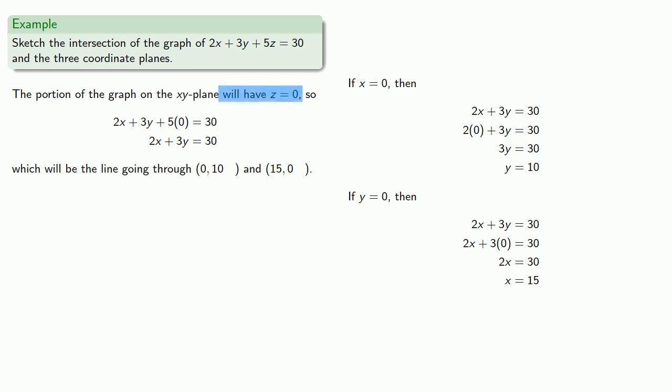It's useful to keep in mind: if it's not written down, it didn't happen. Part of the reason it's useful to write things down—like the portion of the graph on the xy plane will have z equal to zero—is that at some point we may actually want to remember that we're letting z equals zero.